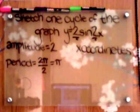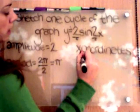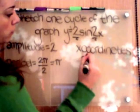The easiest way to find our x-coordinates is by dividing our period by 4. So π divided by 4 is simply π over 4.